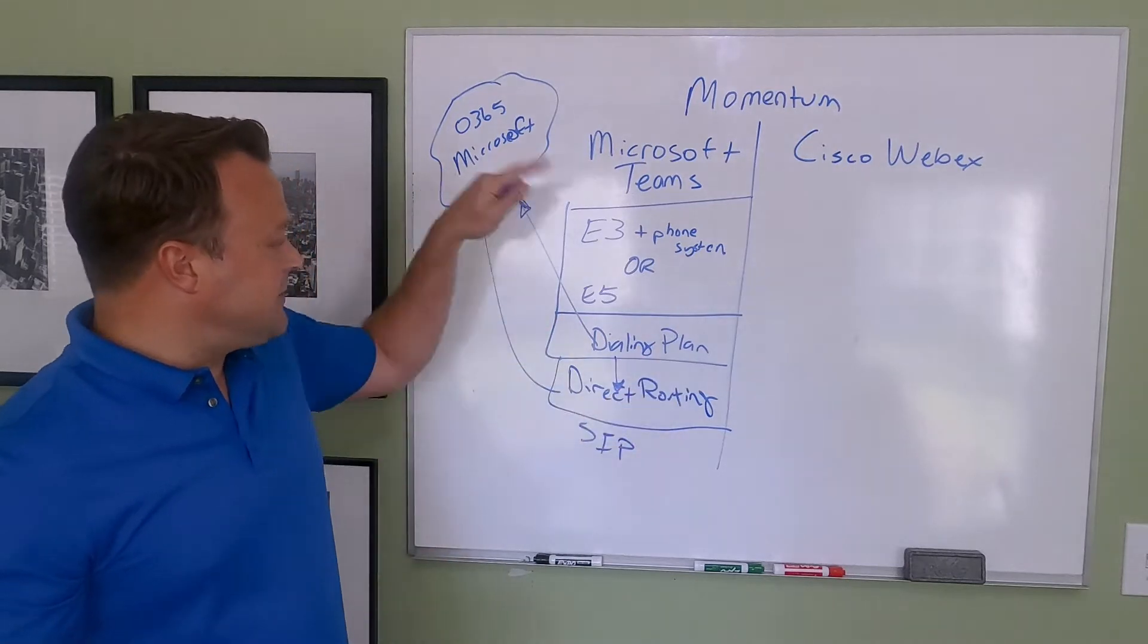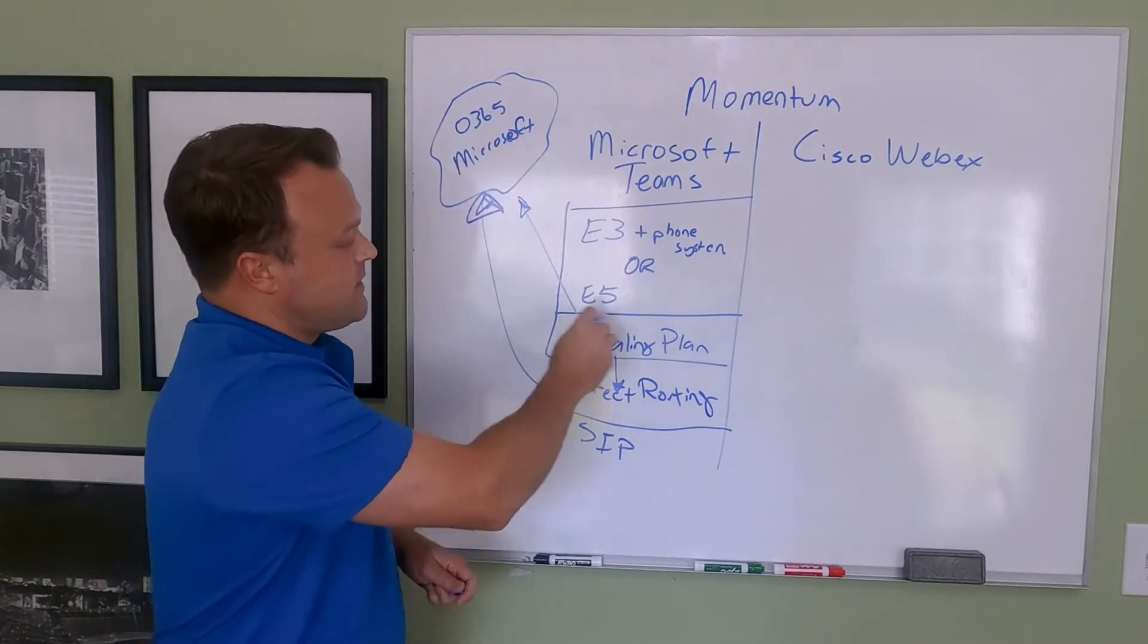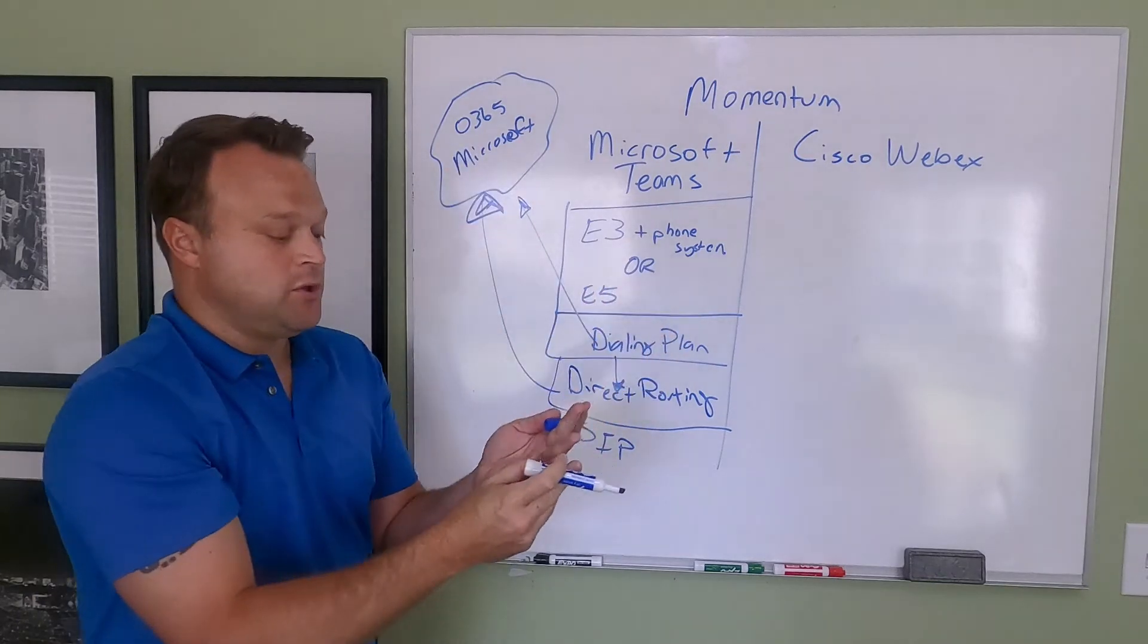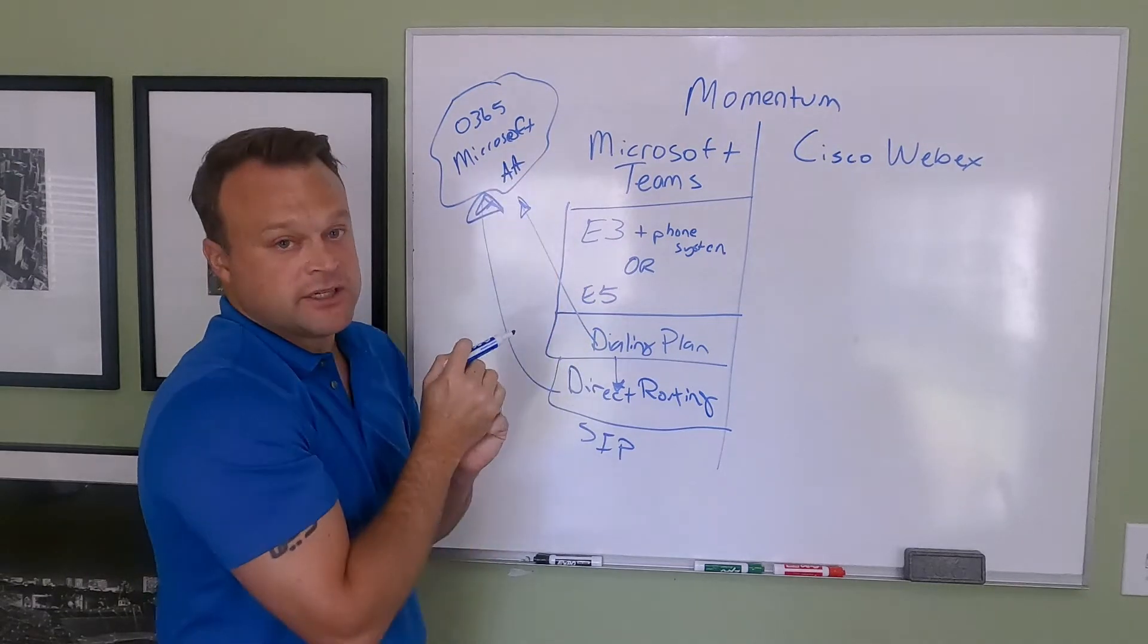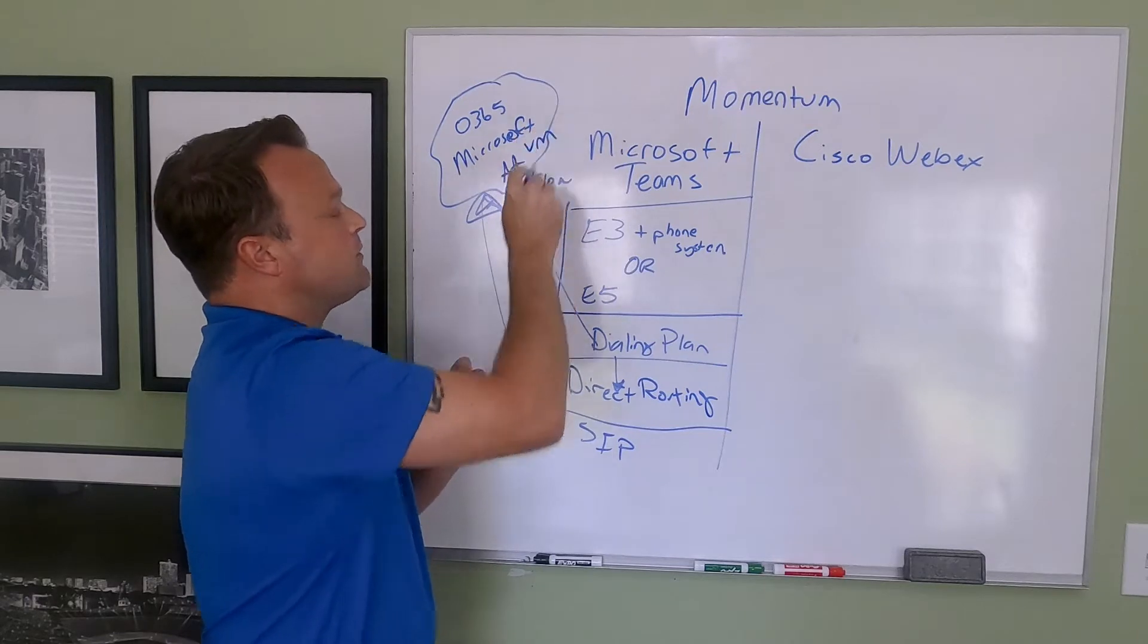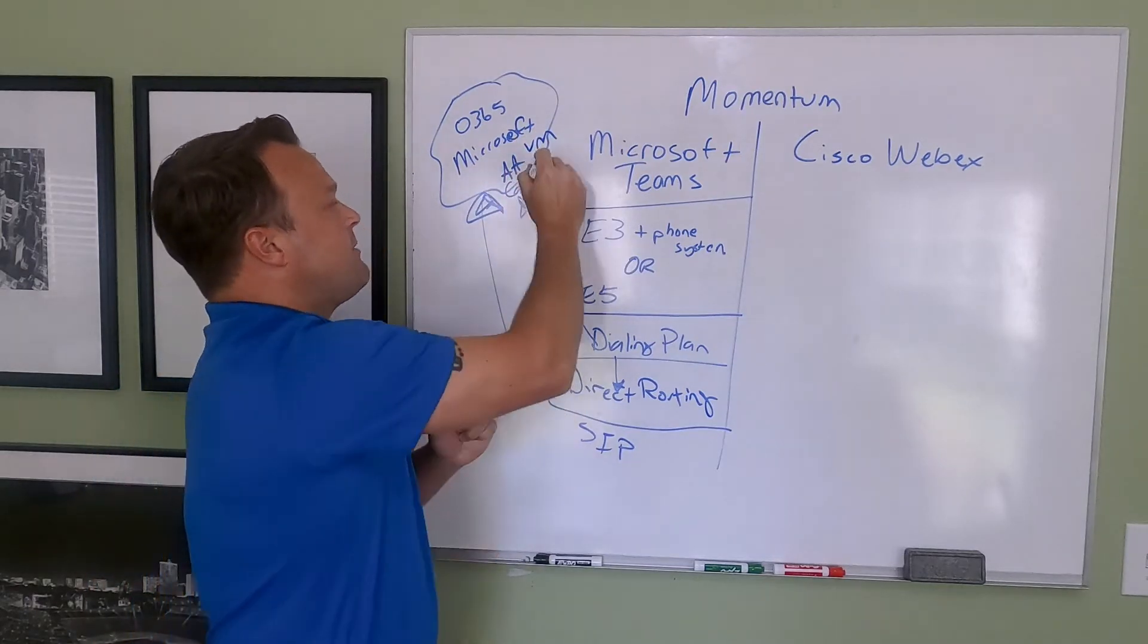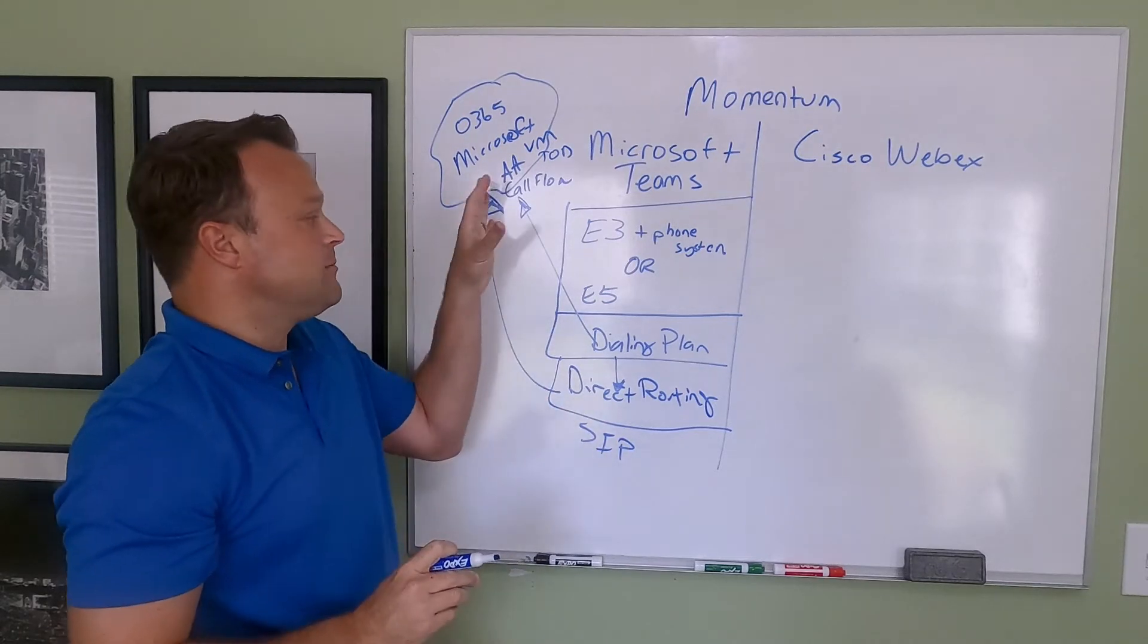Now, in this type scenario, one of the biggest challenges with Microsoft Teams is who's administering, essentially, the phone system. When you think of Microsoft Teams, up here is where your auto attendants live. This is where your call flow lives. This is where your voicemail lives. This is where your time of day is. So all those features and functionality have to be administered by someone.